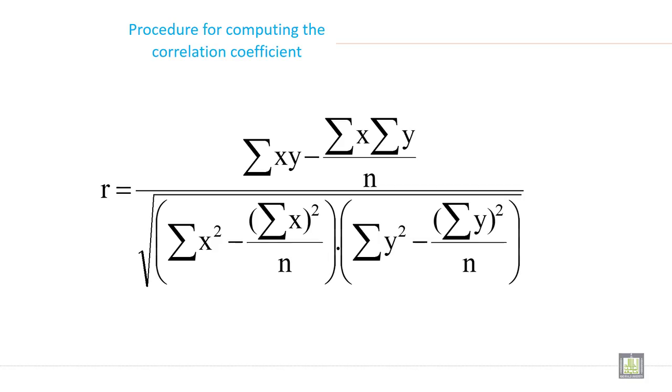Procedure for computing the correlation coefficient. The formula is R equals sigma xy minus sigma x into sigma y divided by n, whole divided by under root sigma x square minus sigma x whole square divided by n under bracket, multiplied by sigma y square minus sigma y whole square divided by n under bracket. Remember this formula to calculate Carl Pearson coefficient of correlation.